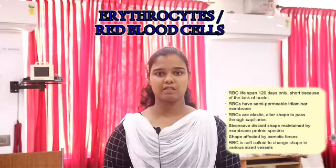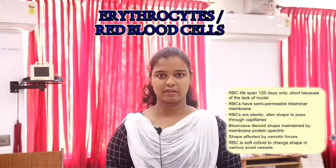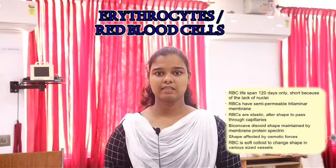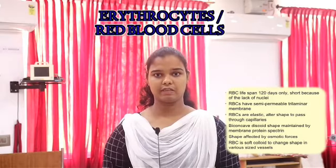Normal shape of RBC is biconcave and it is disc-shaped. It is thinner at the center and the periphery is thicker.